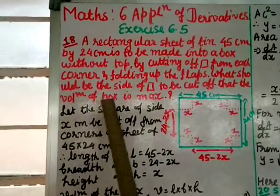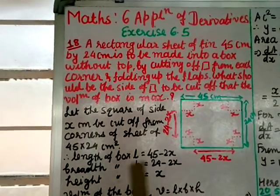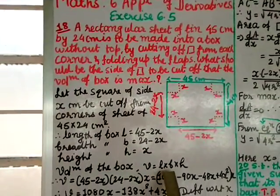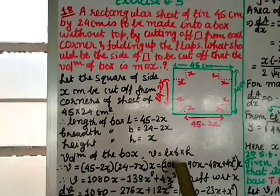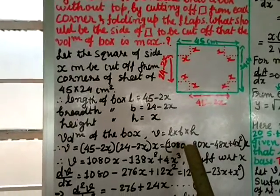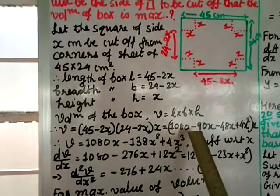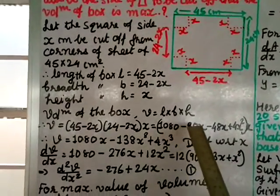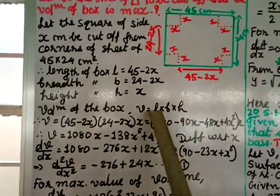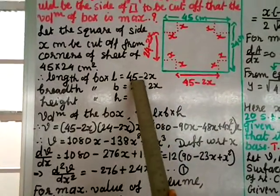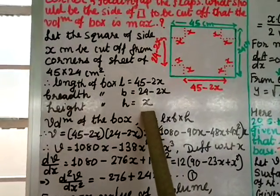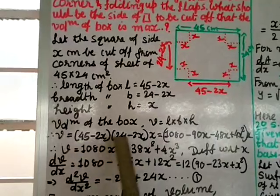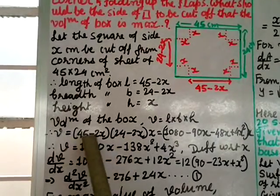They have asked for maximum volume, so I will consider the volume of the box. Volume V equals length into breadth into height, using formula LBH. I substitute L = 45 minus 2x, B = 24 minus 2x, and H = x, then expand the bracket.